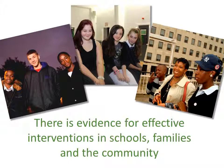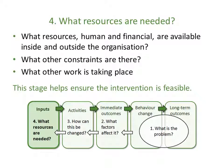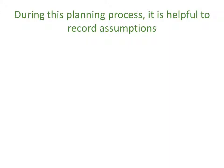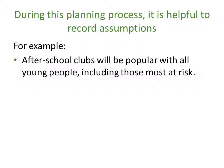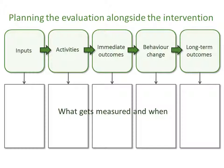Families, schools, and the community all affect young people, and prevention has been shown to work in all of these settings. Finally, what resources are needed? In other words, is what you want to do possible and sensible given the wider context? Another thing to consider is the assumptions you are making — for example: after-school clubs will be popular with all young people including those most at risk; the young people we are working with have the academic ability to benefit from all activities in this program. We need to know whether these assumptions are realistic.